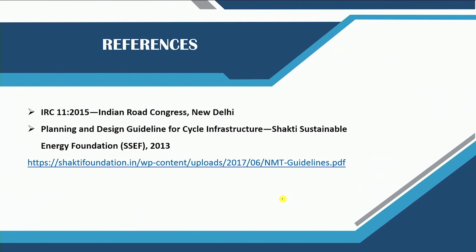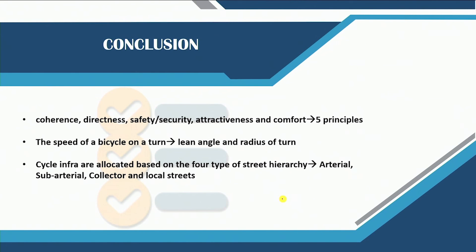That brings us to the end of this lecture. We have one more lecture left in this series for this week. References include IRC 11 (2015) and cross-sectional pictures from the planning and design guidelines for cycle infrastructure developed by the Shakti Sustainable Energy Foundation. In this lecture you have been exposed to design principles for bicycle facilities, how bends on cycling tracks should be provided, minimum cycling speed requirements, and how different cycling infrastructure should be designed for different road hierarchies.